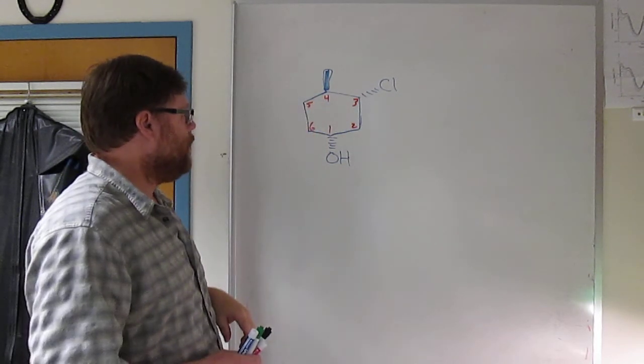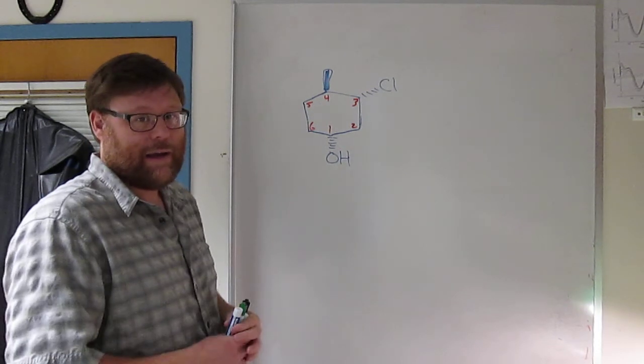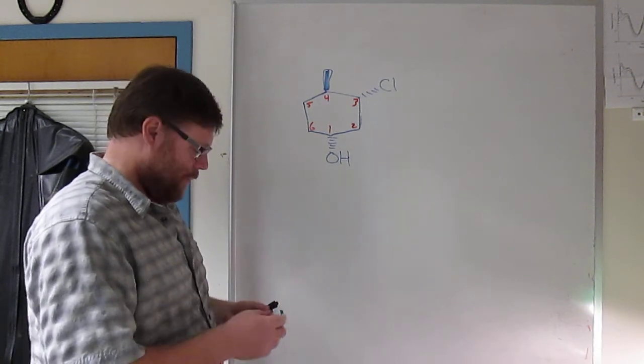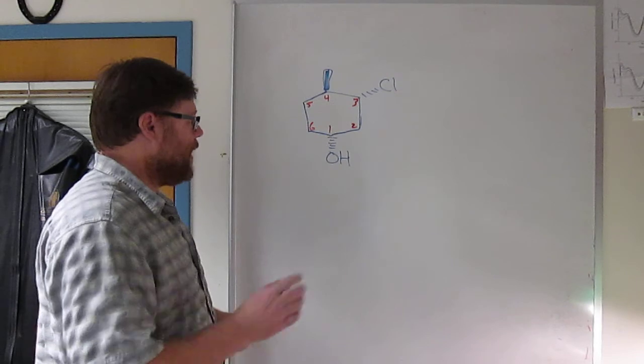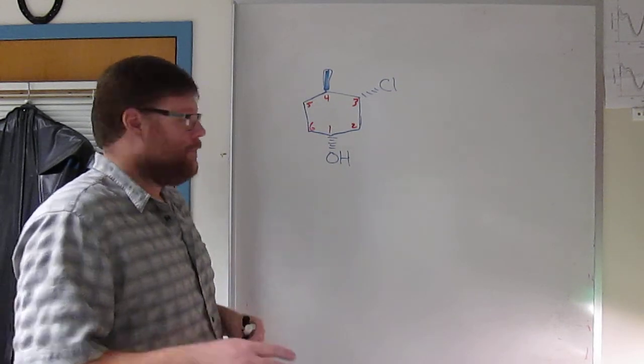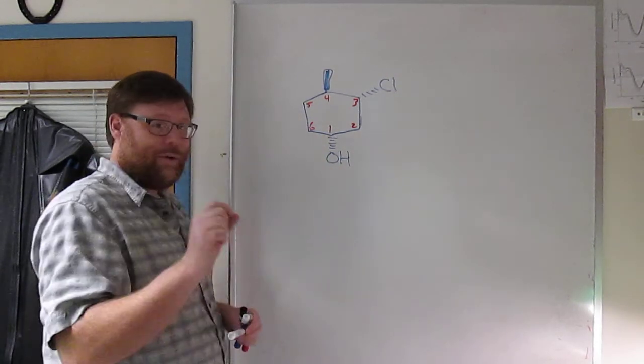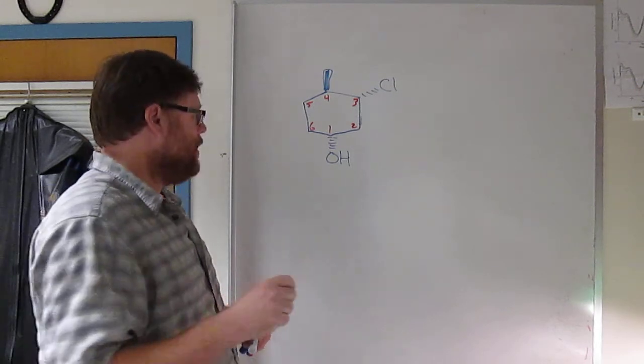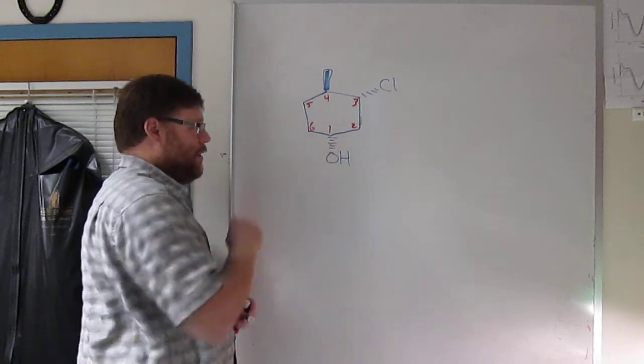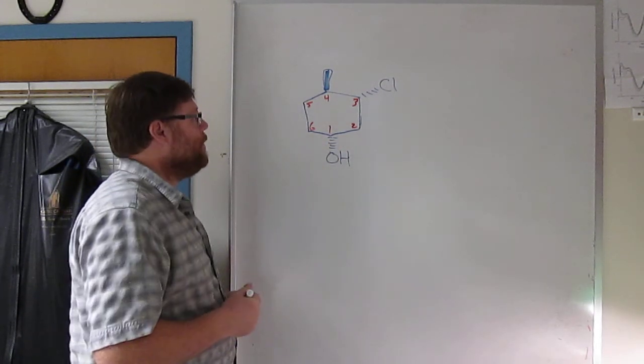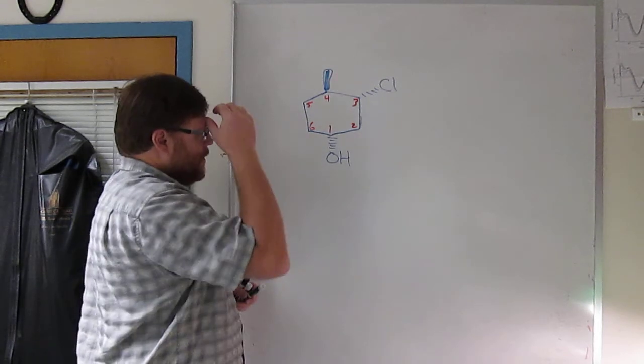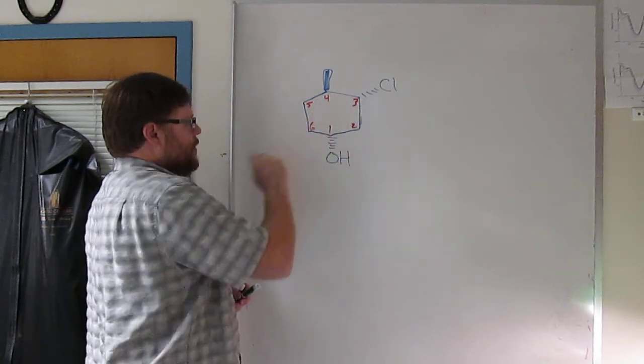First I'm going to do a little nomenclature. This would be a cyclohexanol derivative, so even though it results in higher numbers, in cyclohexanols the alcohol ends up being carbon number one. So we'd number it as I've shown: one, two, three, four, five, six.